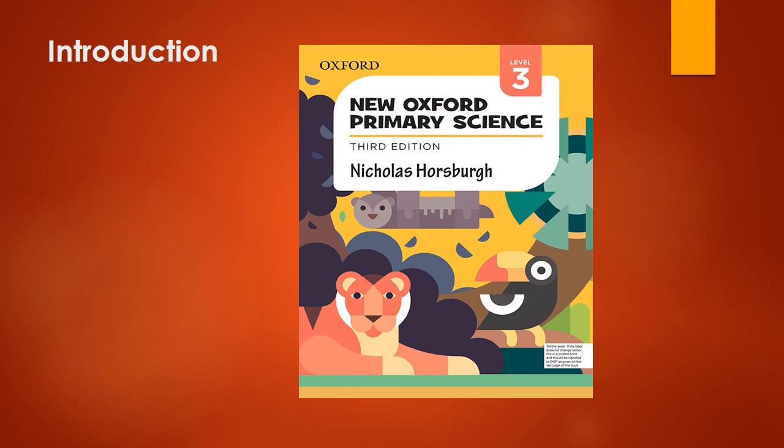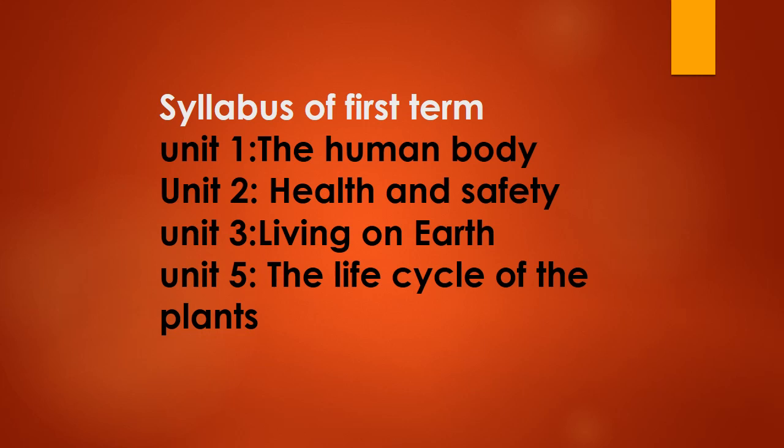Before going into today's lecture, first of all I'll introduce you to your science book. This is the title of your science book — New Oxford Primary Science, third edition. In the first term we have included four chapters: Unit 1 The Human Body, Unit 2 Health and Safety, Unit 3 Living on Earth, and Unit 5 The Life Cycle of the Plant. These four units are included in the first term syllabus.